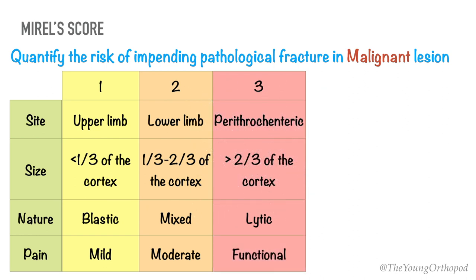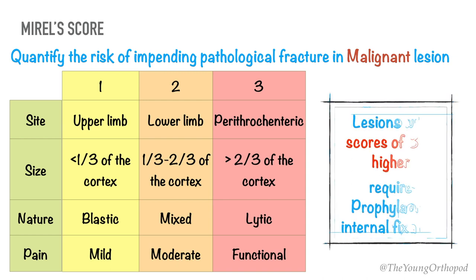Lesions with a score of 7 or lower can be safely irradiated without the risk of fracture, while lesions with scores of 8 or higher require prophylactic internal fixation prior to irradiation.